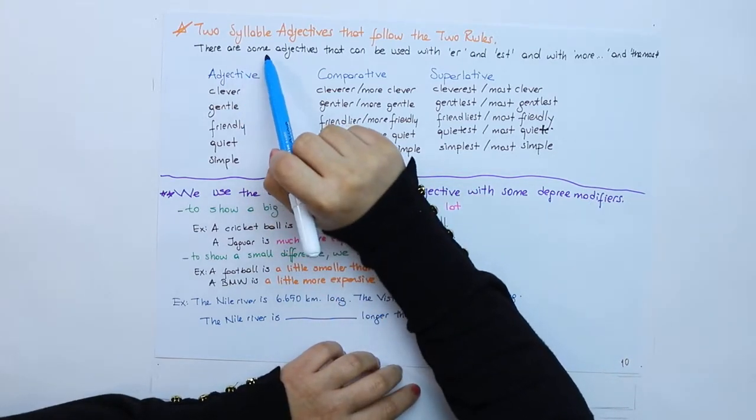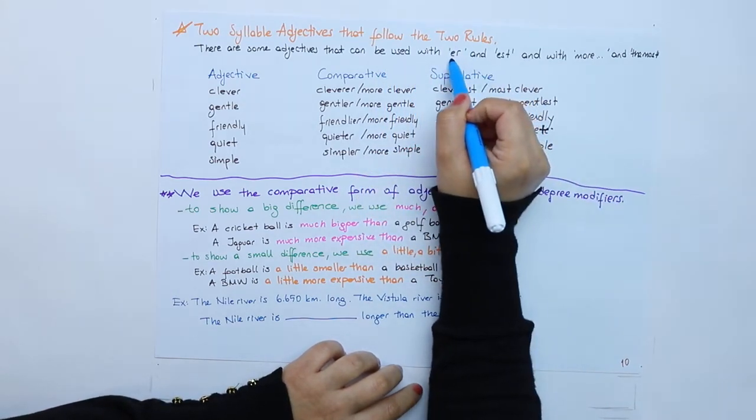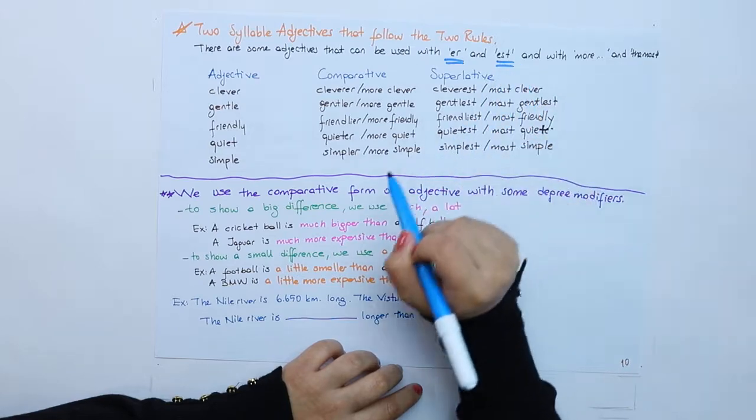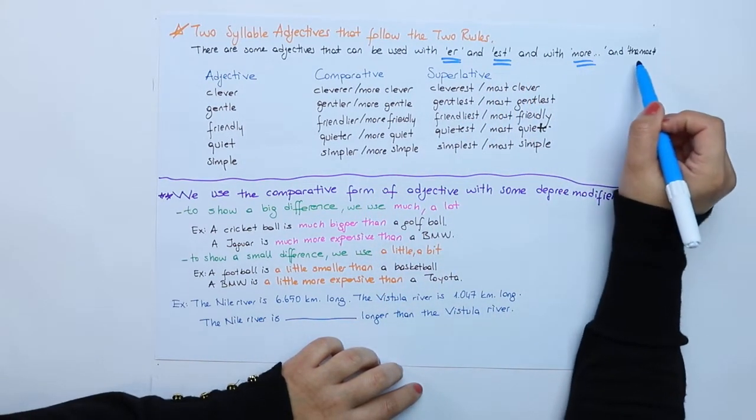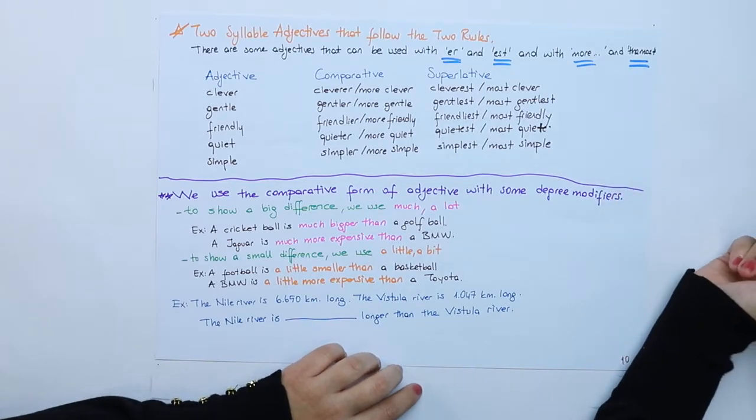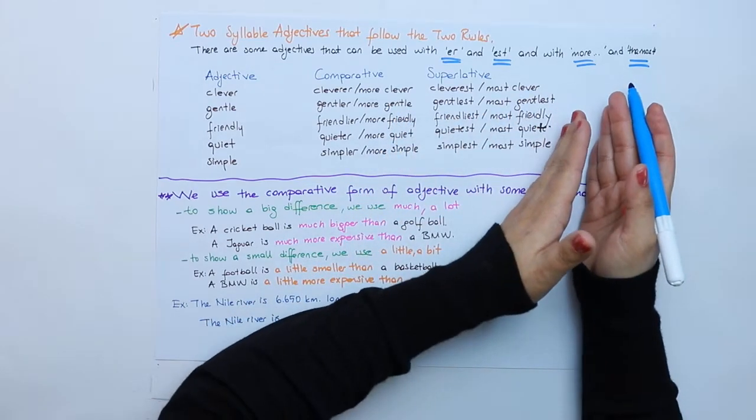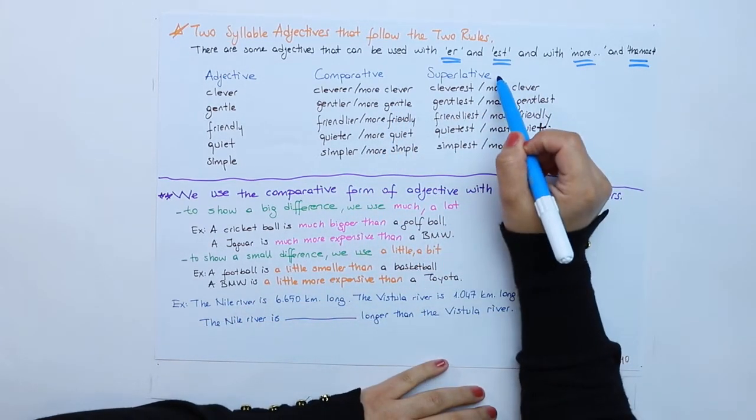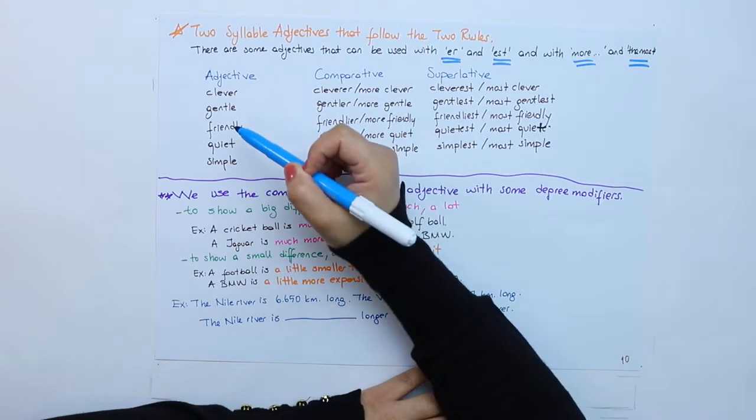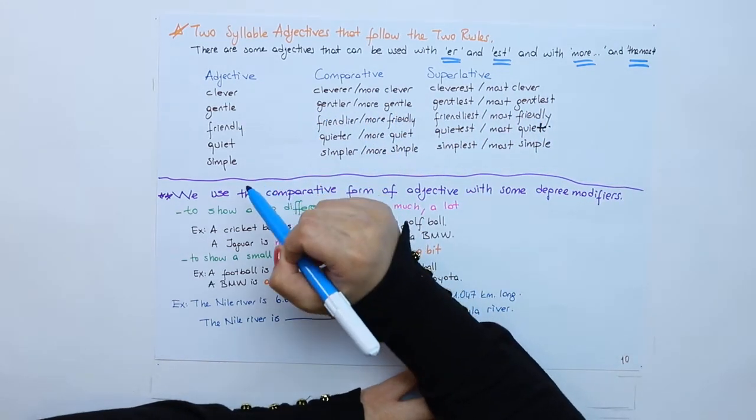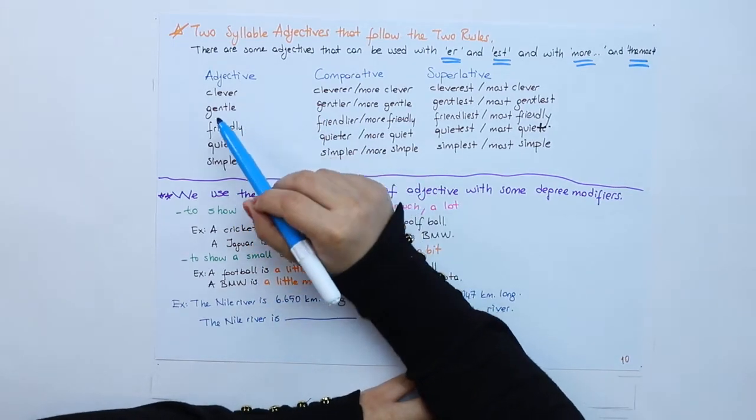There are some adjectives that can be used with both ER and EST and with MORE and THE MOST. It means that you can add ER or MORE, you can add EST or THE MOST. These are the ones that we should know by heart as well.